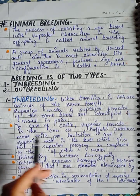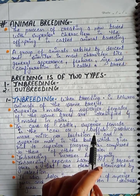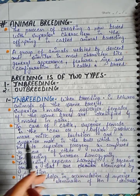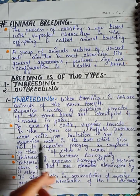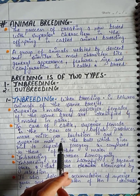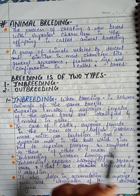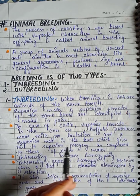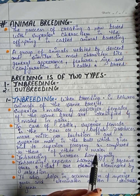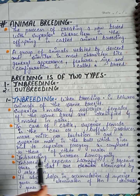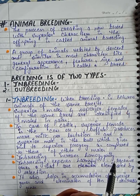In the case of cattle, a superior female is a cow or buffalo that produces more milk per lactation, and a superior male is a bull which gives rise to superior progeny as compared to those of other males.